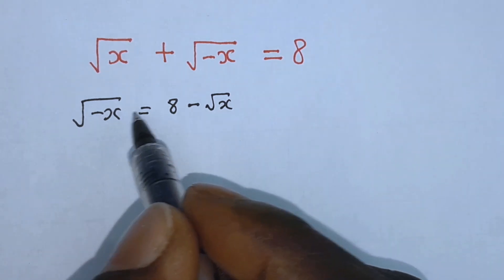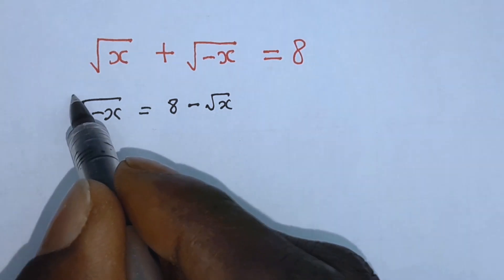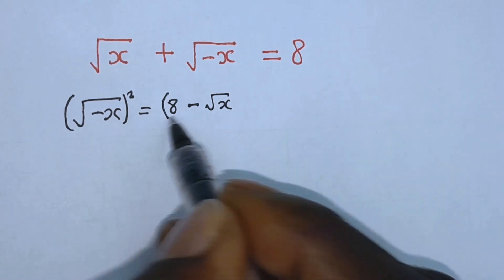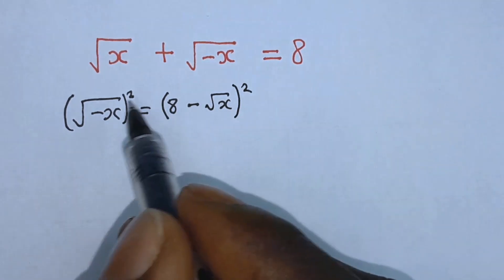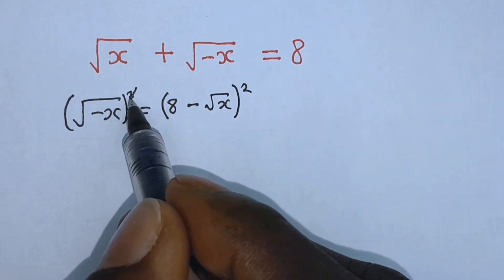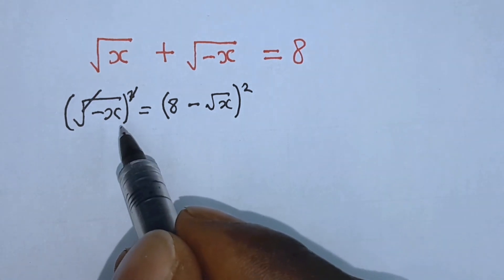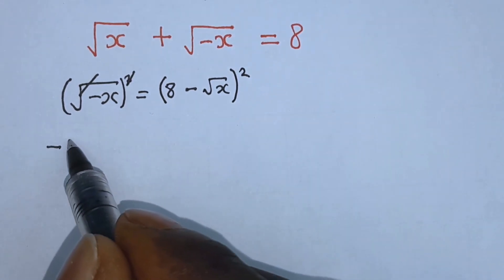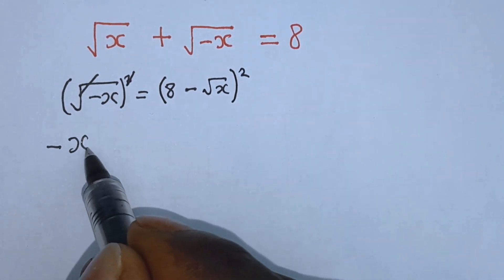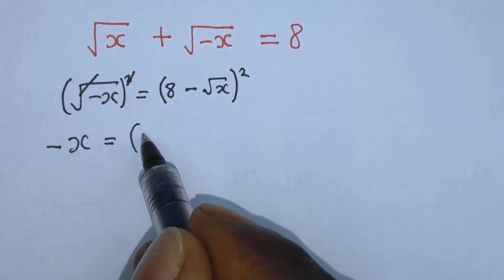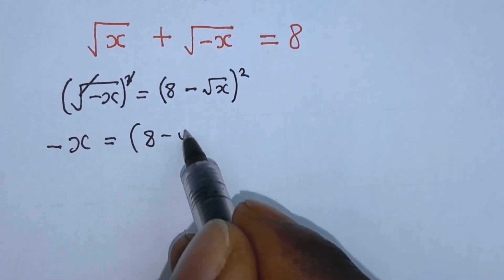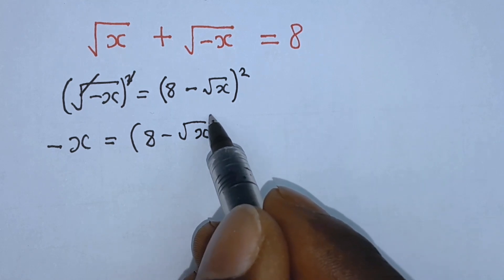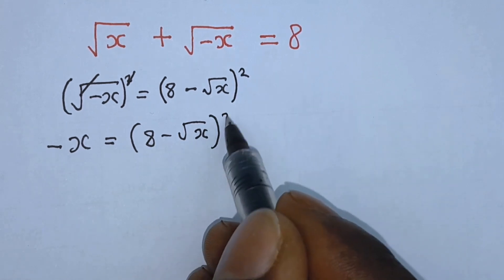From this step we square both sides of this equation. This square gets cancelled with this square root, so we are left with minus x which is equal to 8 minus square root of x, all squared.